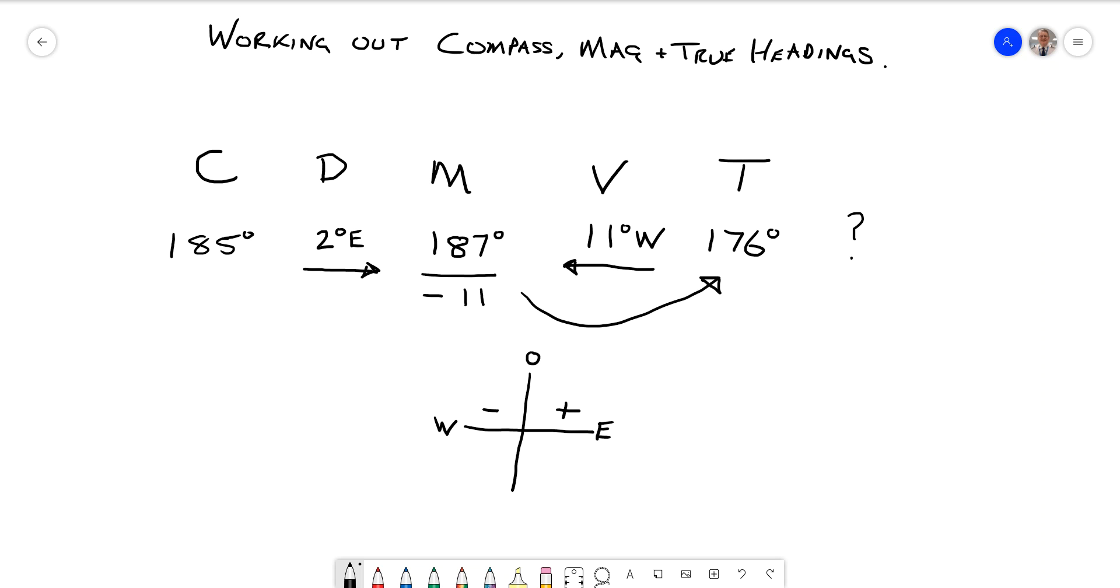They could go the other way. They could say, here's a true heading that we want, what is your compass going to indicate, because that's what you're going to follow. I'll leave the variations and deviations as they are, and I'm just going to change the true heading to, let's say we're going to fly on 045. So I'm going to put in 045 over here, that's my true heading that I want, so I need to know what my compass is going to read.